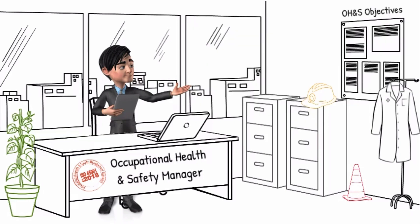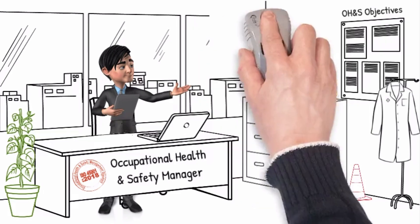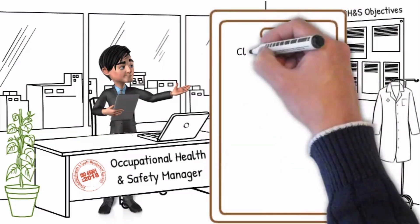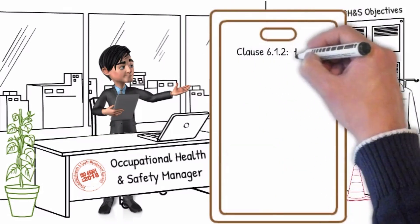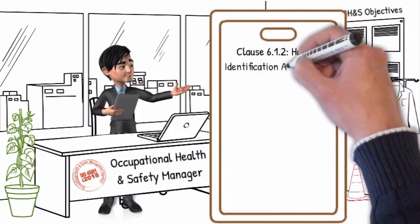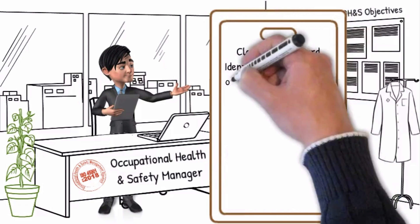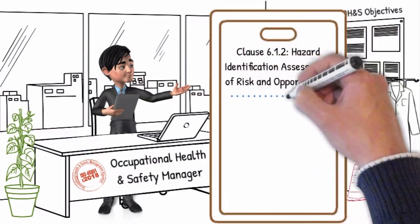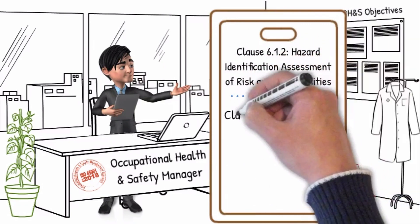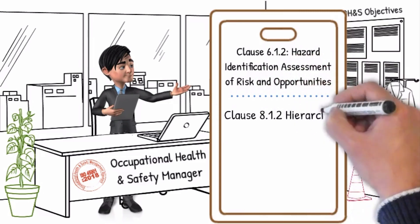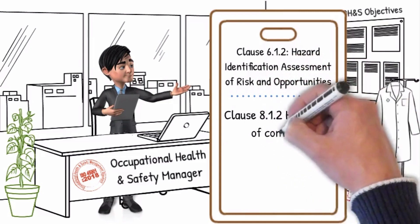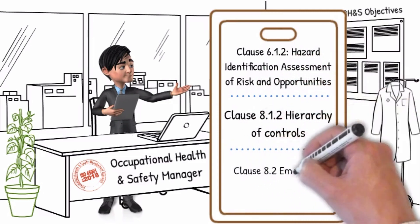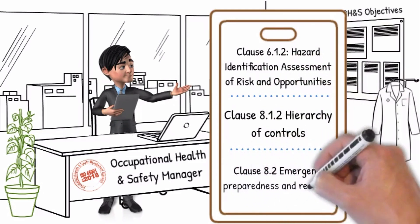We will now review the following related ISO 45001 clauses: Clause 6.1.2 — Hazard Identification, Assessment of Risks and Opportunities; Clause 8.1.2 — Hierarchy of Controls; and Clause 8.2 — Emergency Preparedness and Response.